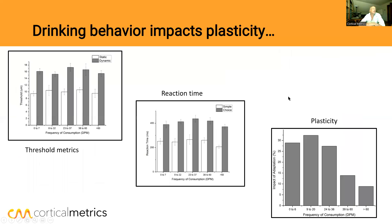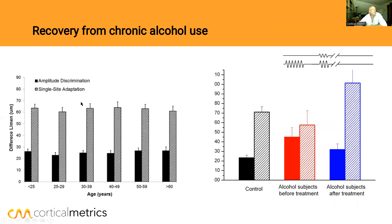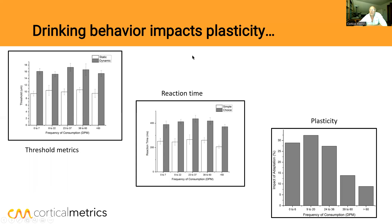Drinking behavior does impact plasticity. We looked at 18 to 22-year-olds and collected a whole bunch of measures. The main measure that was impacted was plasticity, which is a really sensitive measure and one of the building blocks of learning and memory. Subjects were tested while sober — their blood alcohol content was measured at zero — but they took a questionnaire about their drinking behavior.